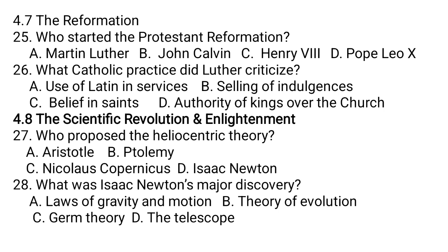Section 4.8: The Scientific Revolution and Enlightenment. Question number 27: Who proposed the heliocentric theory? A. Aristotle. B. Ptolemy. C. Nicholas Copernicus. D. Isaac Newton. Question number 28: What was Isaac Newton's major discovery? A. Laws of gravity and motion. B. Theory of evolution. C. Germ theory. D. Telescope.